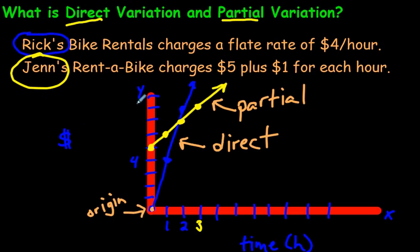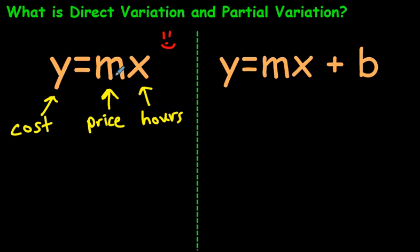If you look back over here, the y-axis was the price. That was the dollars. And along the x-axis here, that was the time in hours. So all you're doing is multiplying the price times the hours. If you had to make an equation for Rick's, you would just say y equals, what was it? I think it's four. Four dollars an hour.